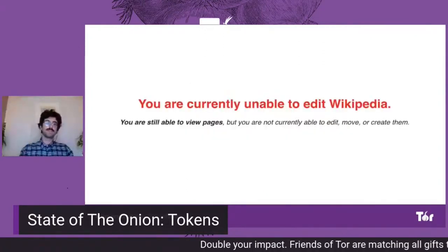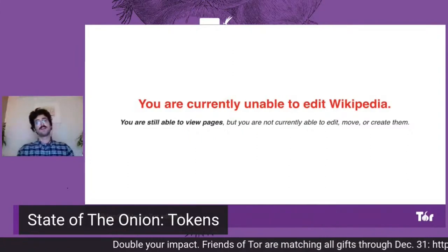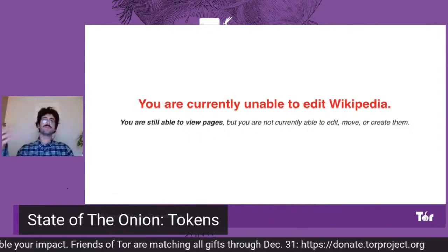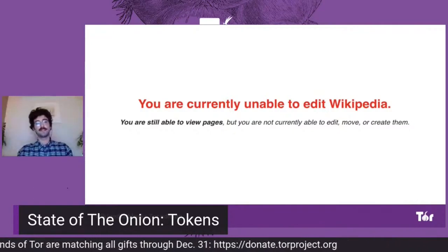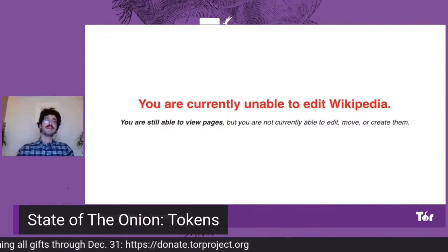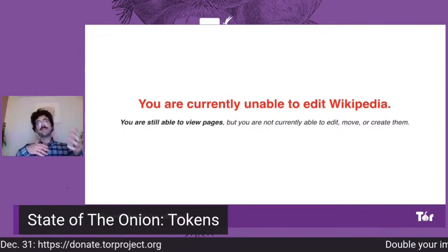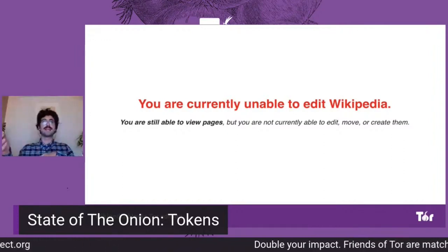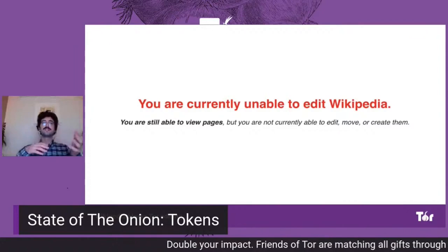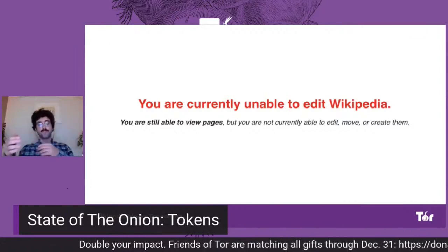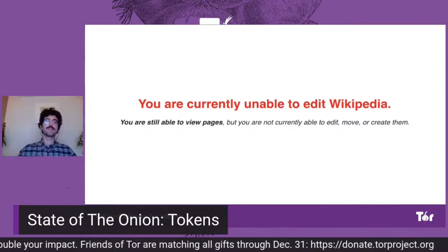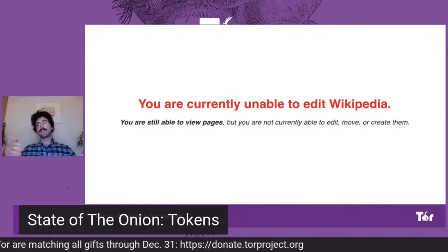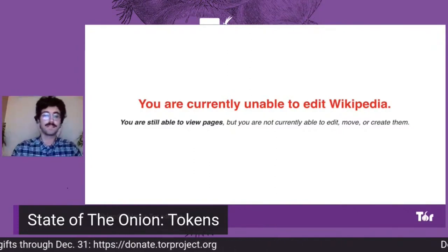For example, you might know that currently we cannot edit Wikipedia over Tor because Wikipedia is afraid of vandalism. And if, in theory, Tor could keep state about its clients, it could potentially try to distinguish or vouch for the good clients to Wikipedia, so that Wikipedia gains more confidence that the good clients are going to be the ones that are editing.